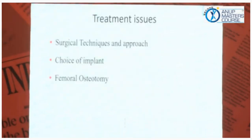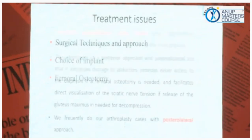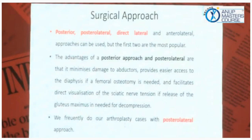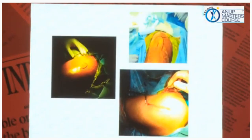Treatment issues include surgical technique and approach, choice of implant, and femoral anatomy. The surgical approaches — posterior, posterolateral, direct lateral, anterolateral — have all been described, but posterior and posterolateral are the most popular. The advantages of the posterolateral approach are that it minimizes damage to abductors, provides easier access to the diaphysis if femoral osteotomy is needed, and facilitates direct visualization of sciatic nerve tension if releases are to be made. I frequently use the posterolateral approach and am happy with it.